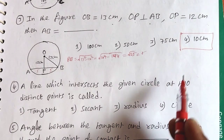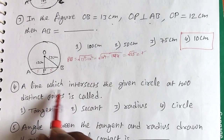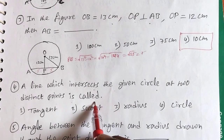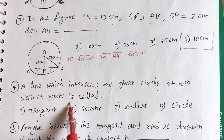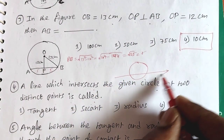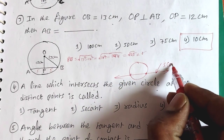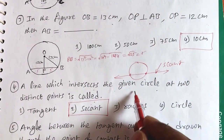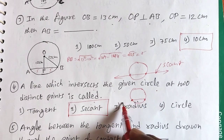Question 4: A line which intersects a given circle at two distinct points is called what? A line that touches the circle at two distinct points — we call this a secant. So the answer is the second option, secant. The chord and secant are different: the secant is the line extended, while the chord has endpoints inside the circle.